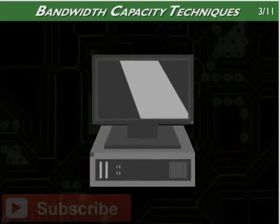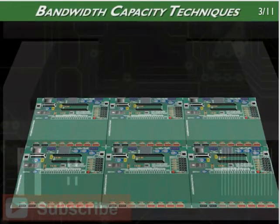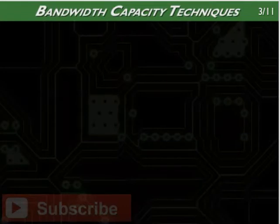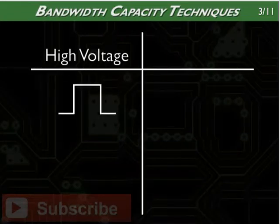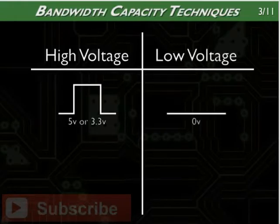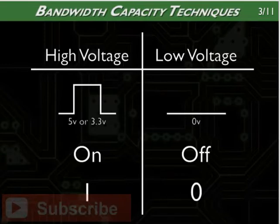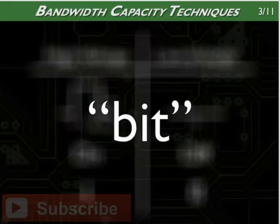A computer is, when you get down to it, a complex set of electrical circuits that interpret different voltages as data. The voltages are in one of two states: a high voltage state — 5 volts or 3.3 volts, depending on the system — or a low voltage state, 0 volts. These states are interpreted as either on or off and are represented as either a 1 or a 0. We call each of these states a bit.